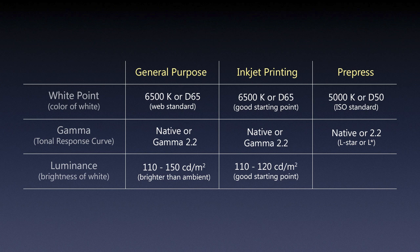As far as gamma for pre-press, I would go with native or 2.2 as your best bet. However, if you're working with the ECI profile — which has its own tone response curve called L* — then calibrating your monitor to L* makes more sense. So if you're using that profile and sending work to be printed in a pre-press environment, calibrating your screen to L* is a good choice, and we'll talk about that more when we get to actual profiles.